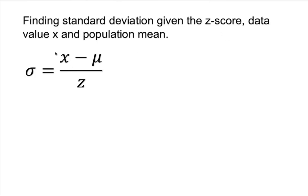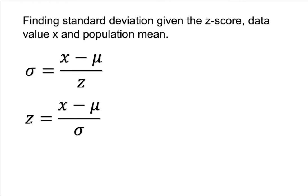We know the z-score formula. The z-score formula is z equals x minus the mean over standard deviation. All you need to do is shift the placement, because we're trying to isolate the standard deviation. You can plug everything into the formula and isolate it, or you can just interchange the variables — multiply, cross multiply, and divide by z on both sides. Many ways you can do that, or just shift sigma up there and z down here.